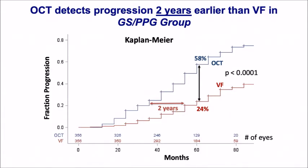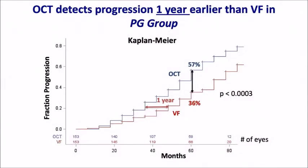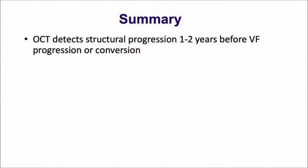If you look in the parametric glaucoma group, it was about one year. We're seeing that OCT is a more sensitive indicator of change occurring.